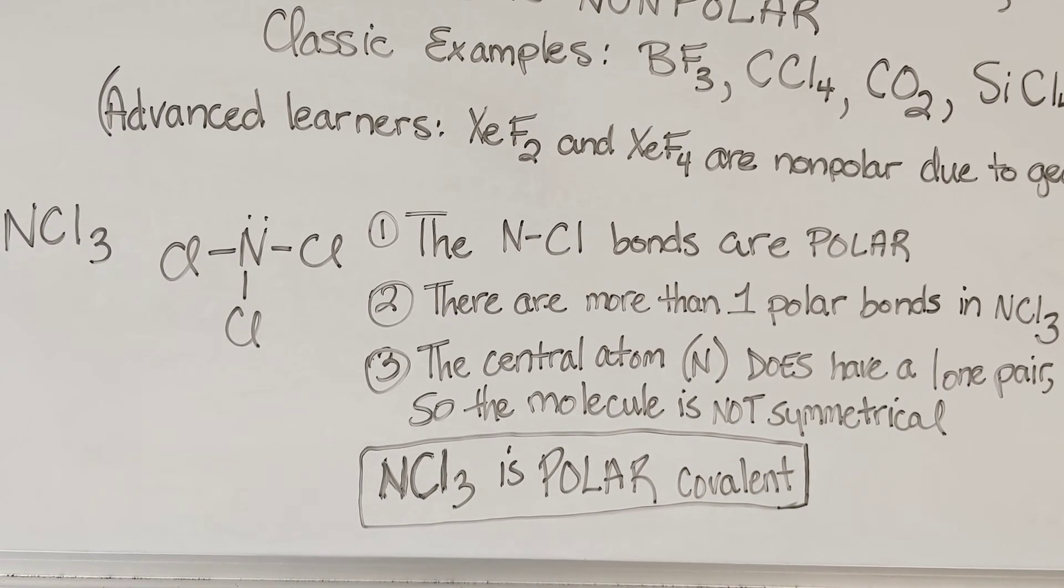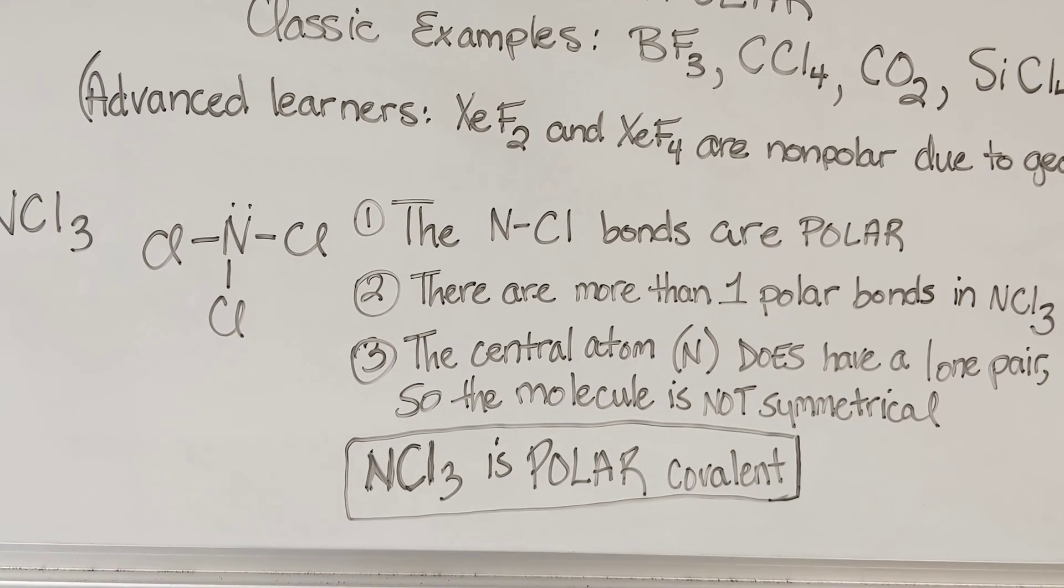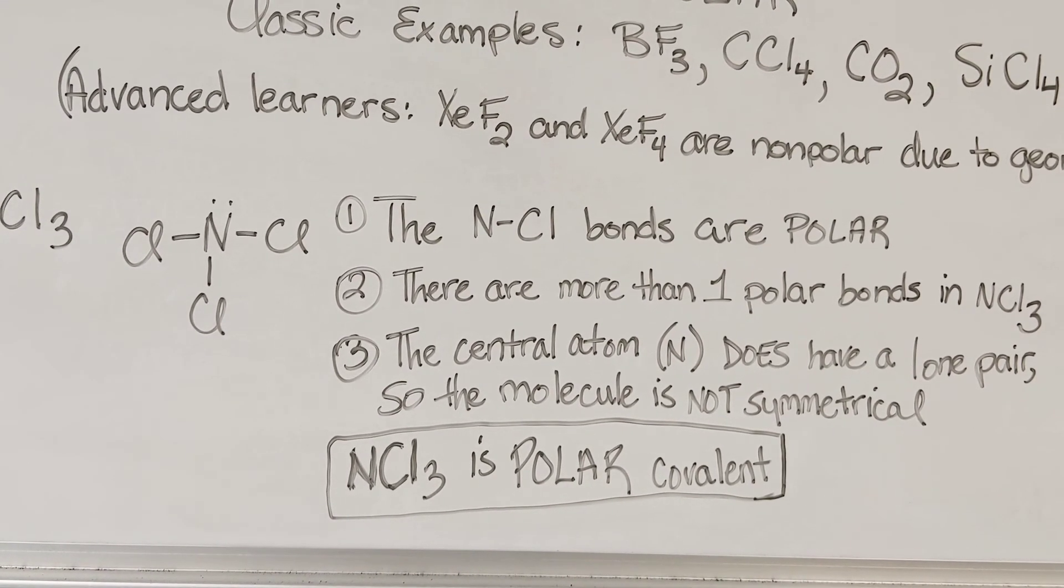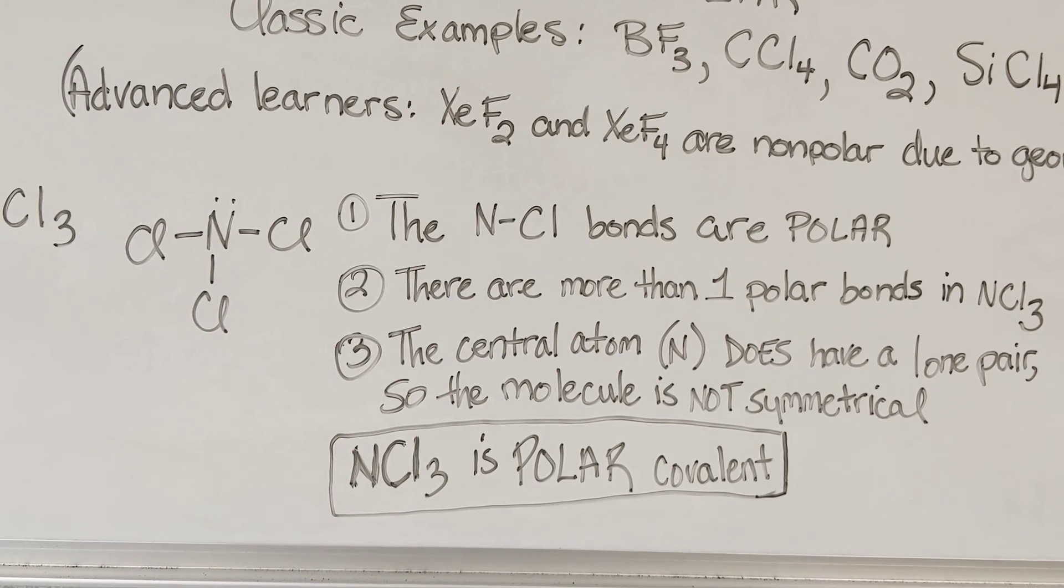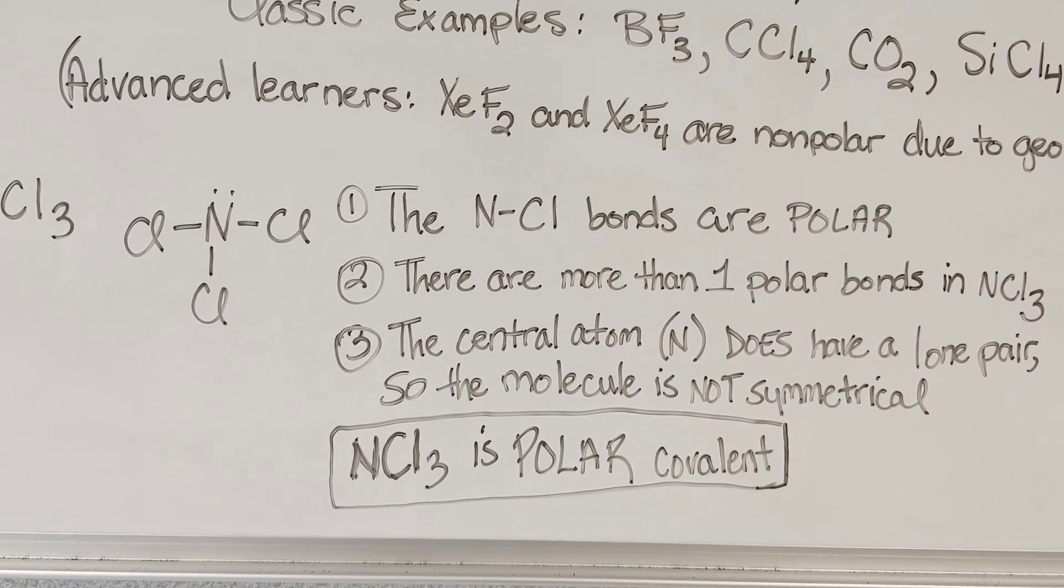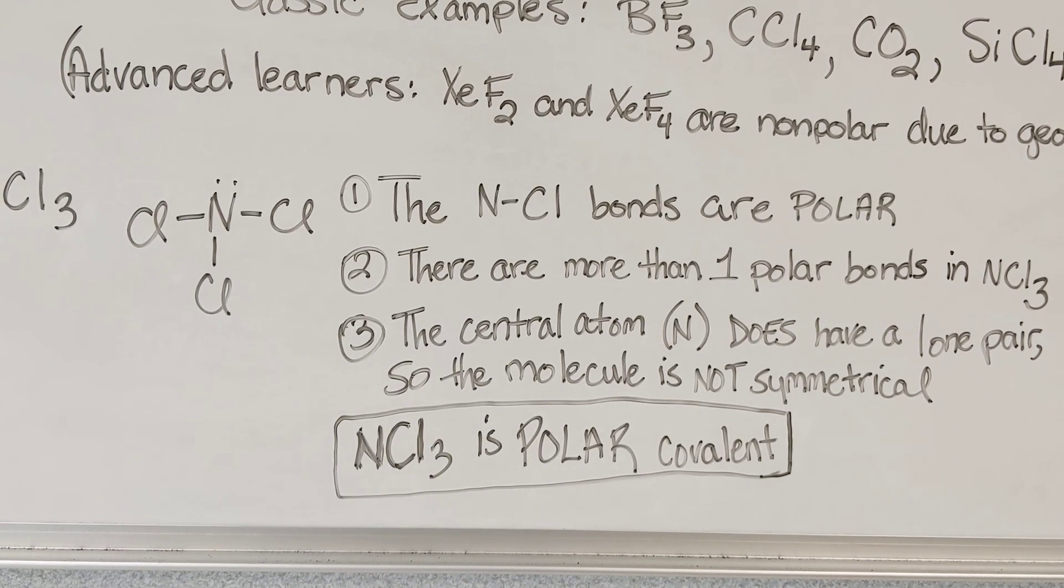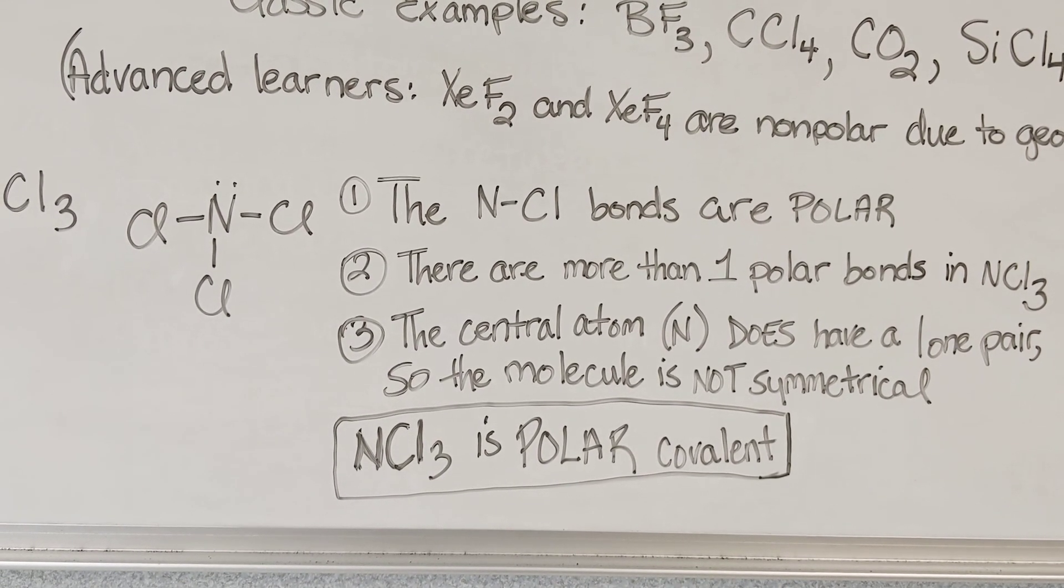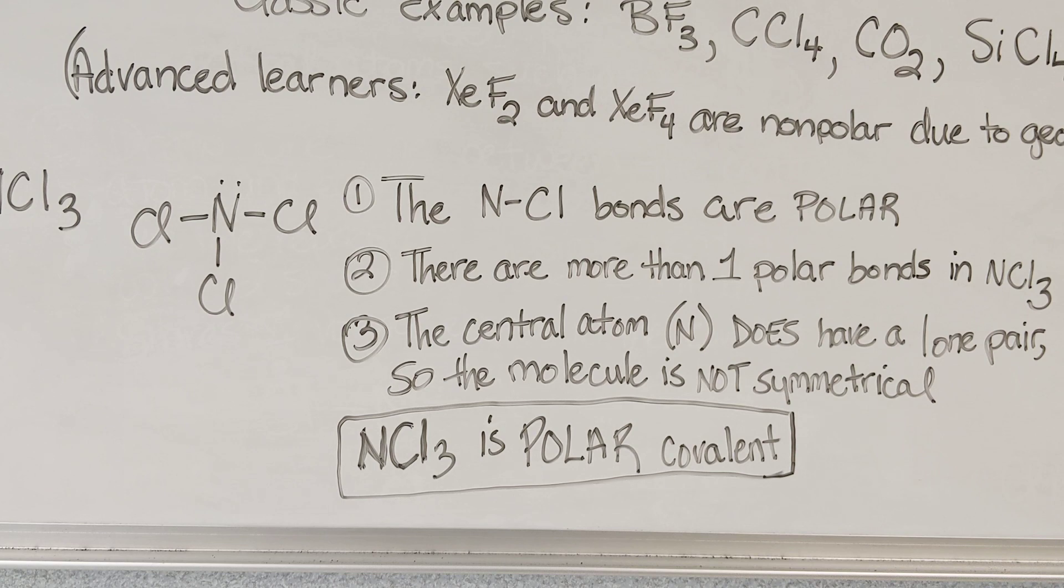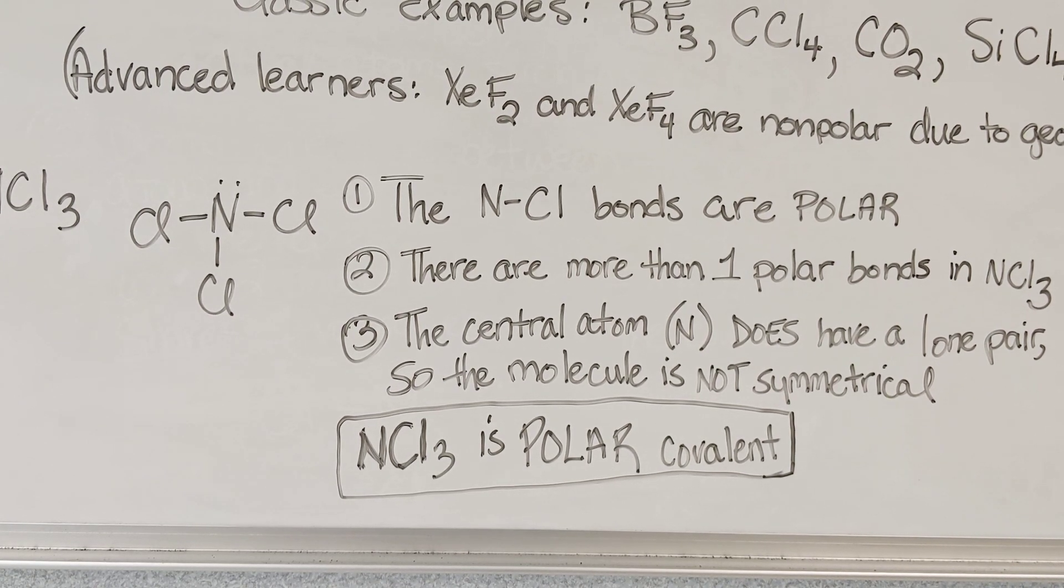In this case, there are more than one polar bonds in NCl3, so we need to look for symmetry. The central atom, nitrogen, does have a lone pair of electrons, so the molecule is not symmetrical. Therefore, NCl3 is a polar covalent molecule.